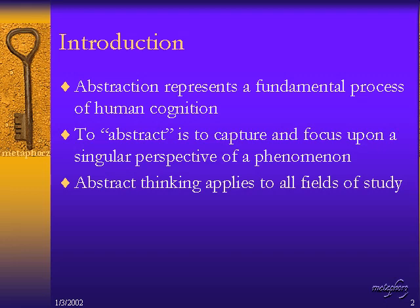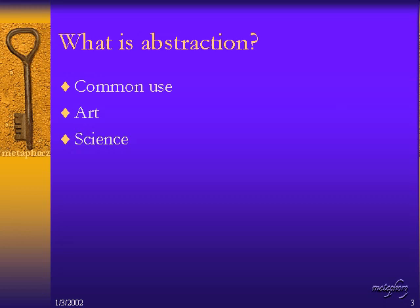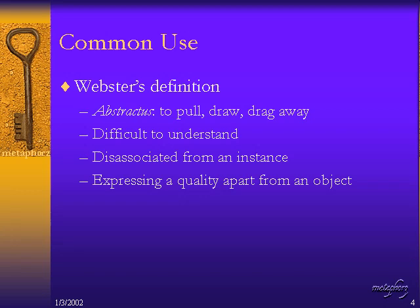Abstraction ultimately leads to modeling and is thus an extremely important concept. Abstract thinking can be found in just about all fields of study. When we talk about abstraction, the first thing we want to figure out is how it's used commonly — that is, what's its dictionary definition — and after that we'll look into abstraction in art and then in science.